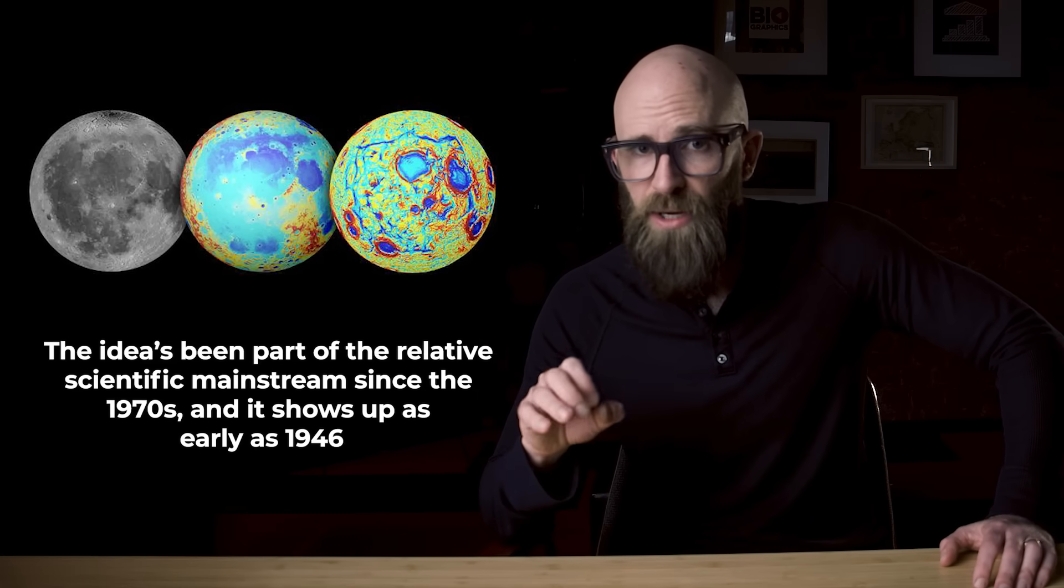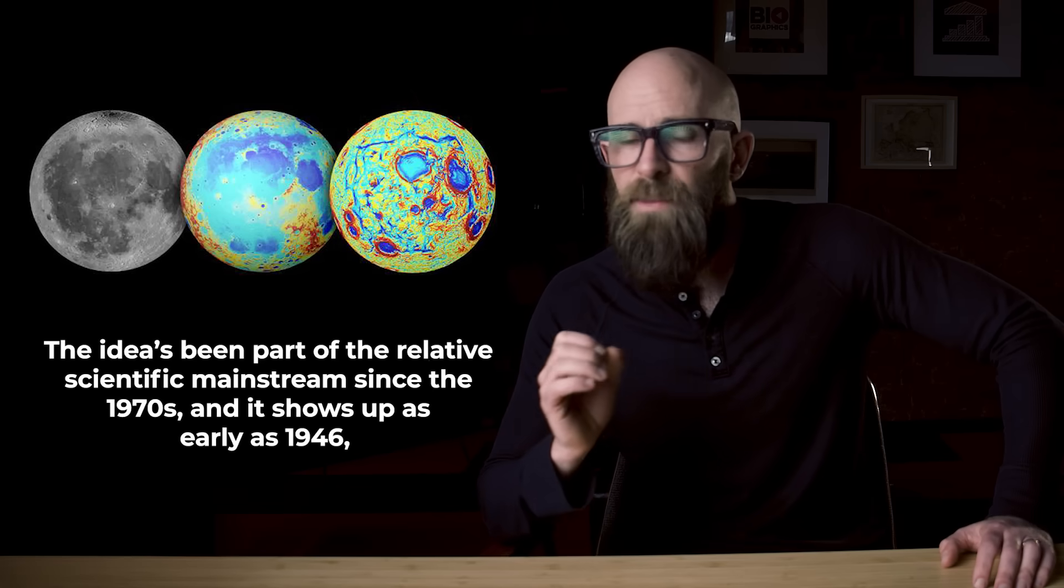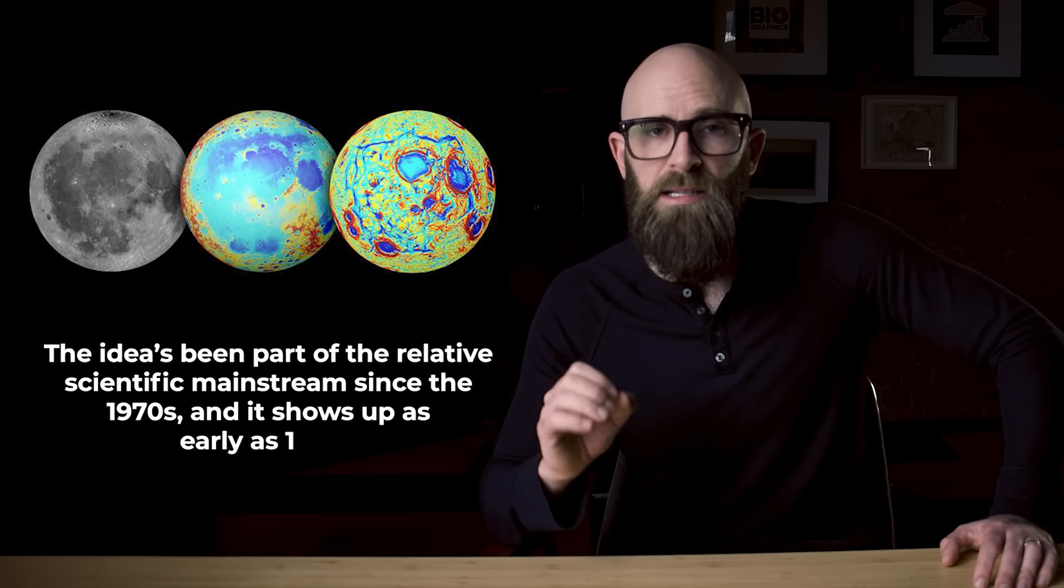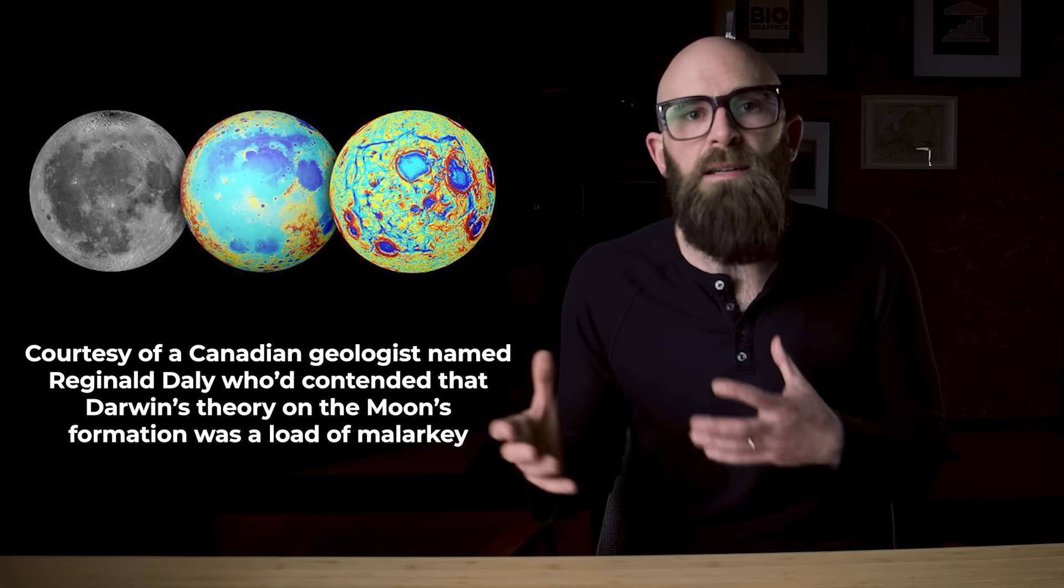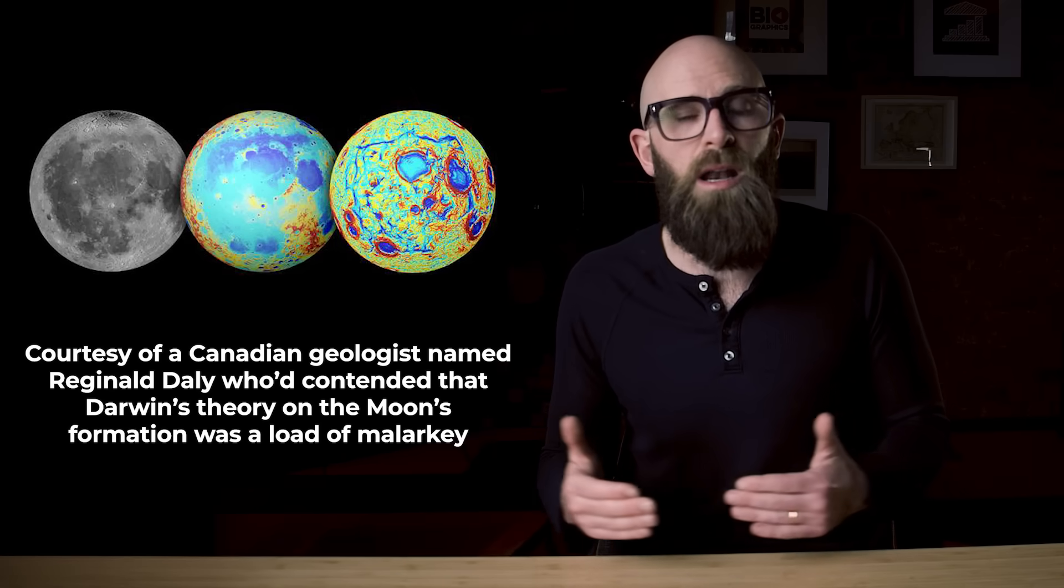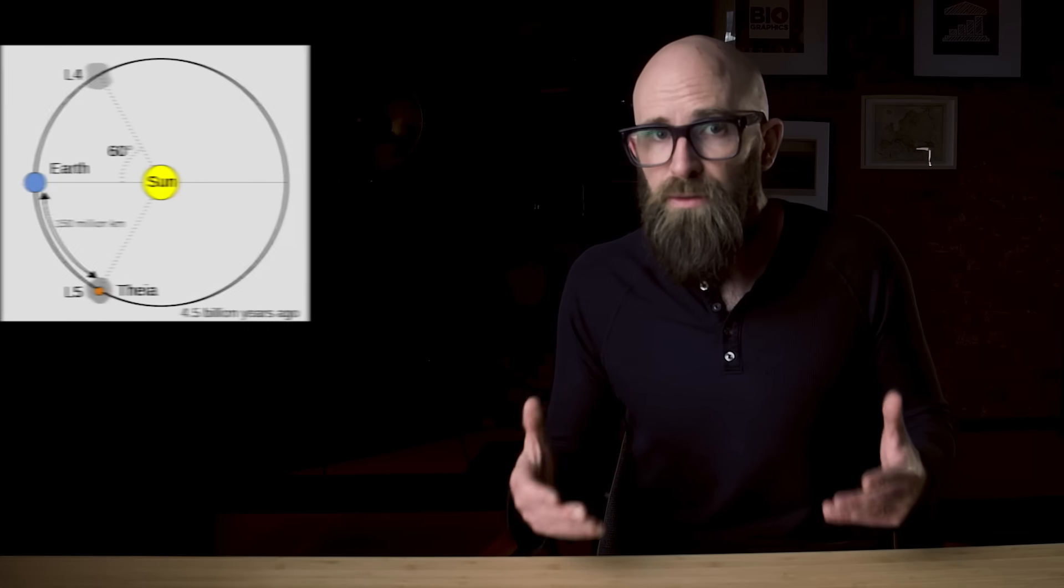The idea that a planetary impact might have created the moon isn't a particularly new one, at least on the timeline of modern astrophysics. The idea's been part of the relative scientific mainstream since the 1970s, and it shows up as early as 1946, courtesy of a Canadian geologist named Reginald Daly, who'd contended that Darwin's theory on the moon's formation was a load of malarkey. That theory, by the way, had involved the Earth and the moon starting as one object, but the moon eventually was actually spinning off it due to centrifugal force.